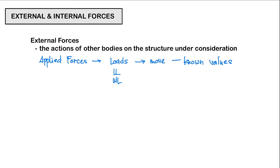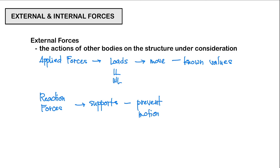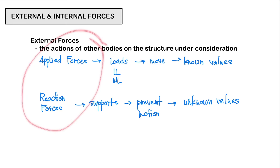The next type of external forces are our reaction forces, or simply your reactions. These forces are exerted by the supports on the structure. They tend to prevent motion, thus keeping our structures in equilibrium. Typically, these are our unknown values. The state of equilibrium or motion of our structures as a whole is governed by these forces — your applied forces and your reaction forces.